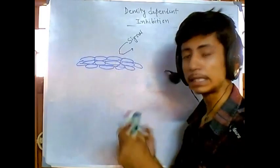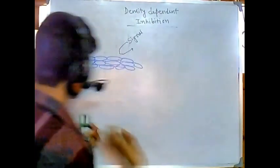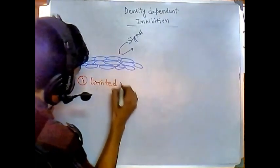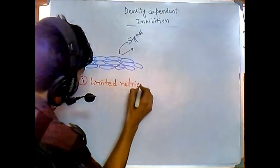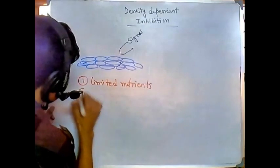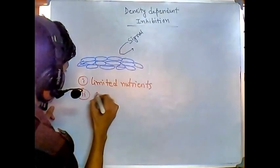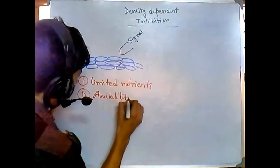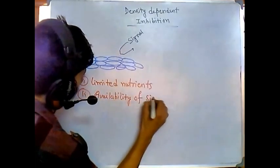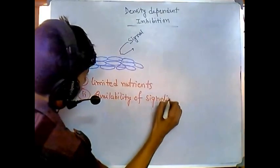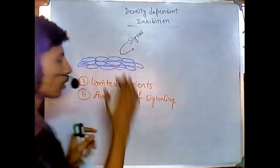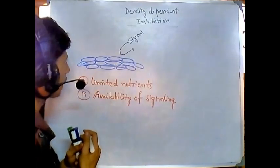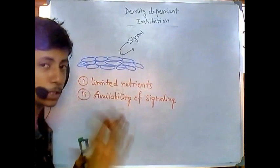Remember two points I've told you: one is limited nutrients, and also availability of signaling molecules. Due to majorly these two reasons, they don't want to grow at a particular density or above a particular density. That's why this density dependent inhibition is very much required for normal tissue.